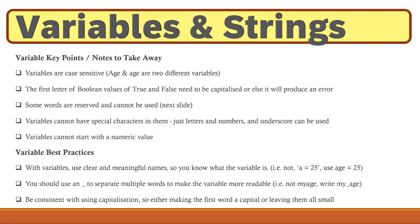Variables can have numeric values in them but they cannot start with them. There are some best practices with variables, and I follow these three in particular. Use clear and meaningful names so you know what the variable is — for example, not 'a equals 25', use 'age equals 25'. Make sure it's meaningful so when someone else reads the program they know exactly what that variable is. Also use an underscore to separate multiple words to make the variable more readable — for example, write 'my_age' instead of 'myage'.